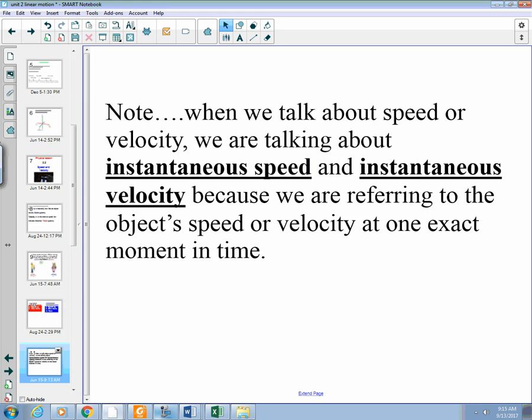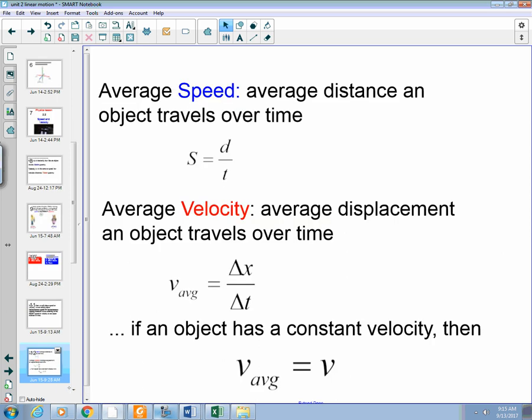Alright, so for this section, we are going to be looking at instantaneous speed and instantaneous velocity. So, how fast an object is moving at a certain moment in time. So, at one second, how fast they are going. Two seconds, how fast they are going. For most of our notes here in our homework, we will also be looking at something called average speed and average velocity. This is where we are going to spend a lot of time on.